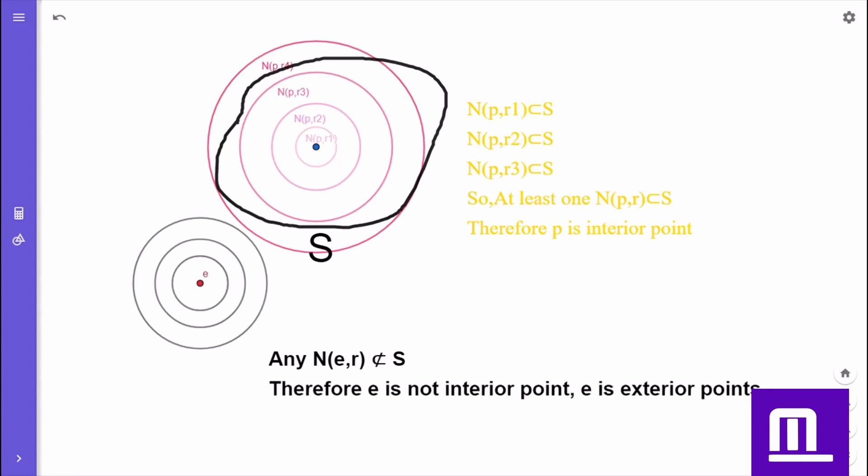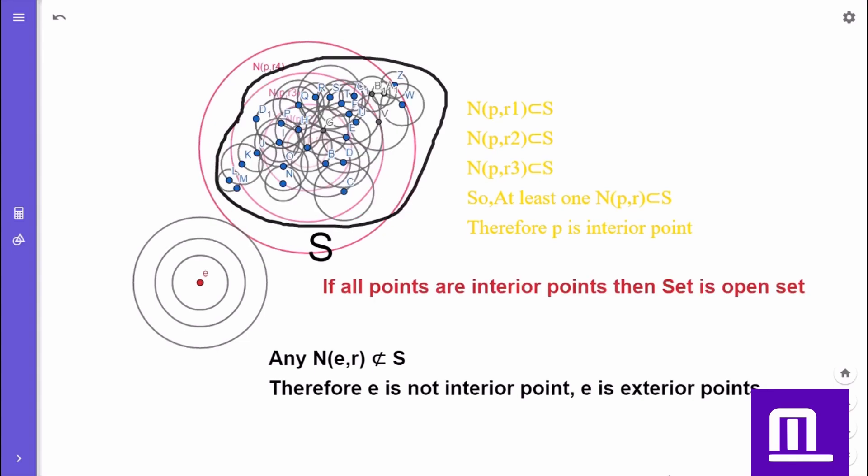Next, what is meant by interior points of a set? It's simple, say point P is interior point of the set s. Then it must contain at least one neighborhood, which is a subset of the set. If all points of the set s are interior points, then the set is an open set.